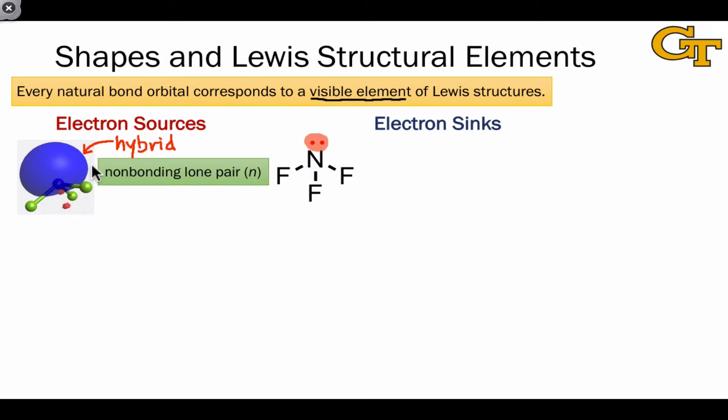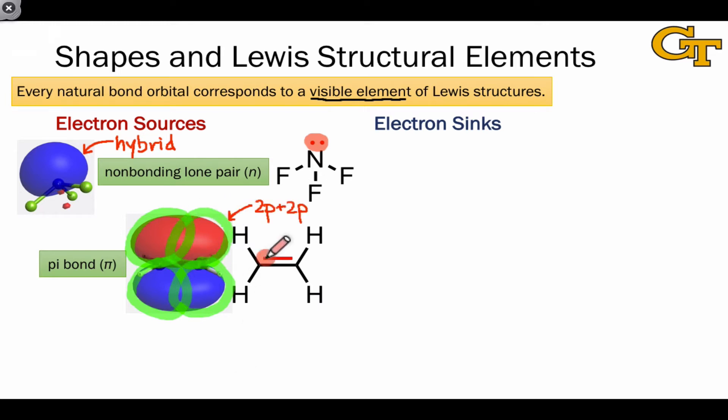Every pi bond is associated with a pi bonding orbital, and we can see that this is constructed from the side-on overlap of two adjacent p orbitals. Every double or triple bond within a Lewis structure is associated with one or two pi bonding orbitals, corresponding to the second and third bonds of the double and triple bond.